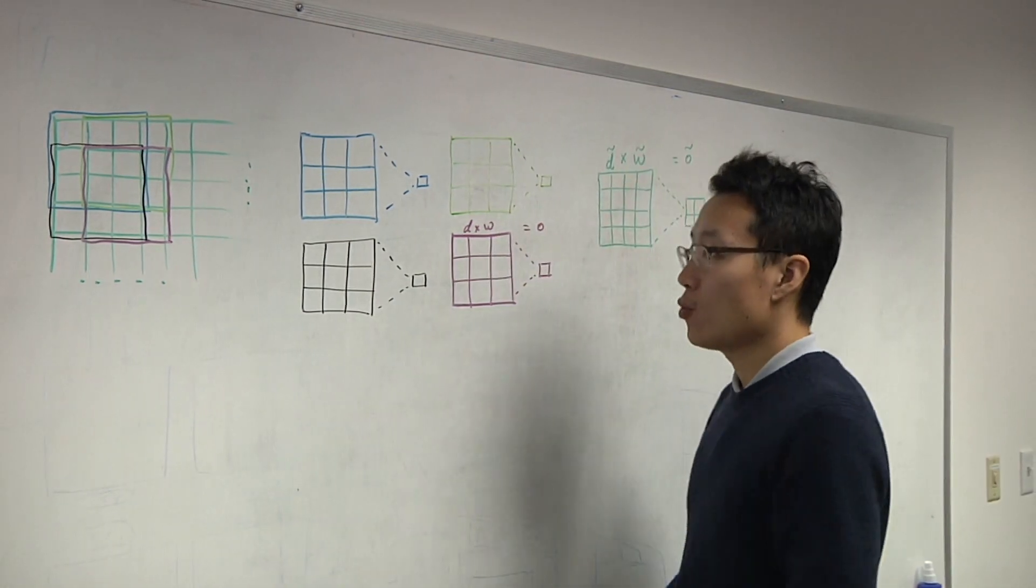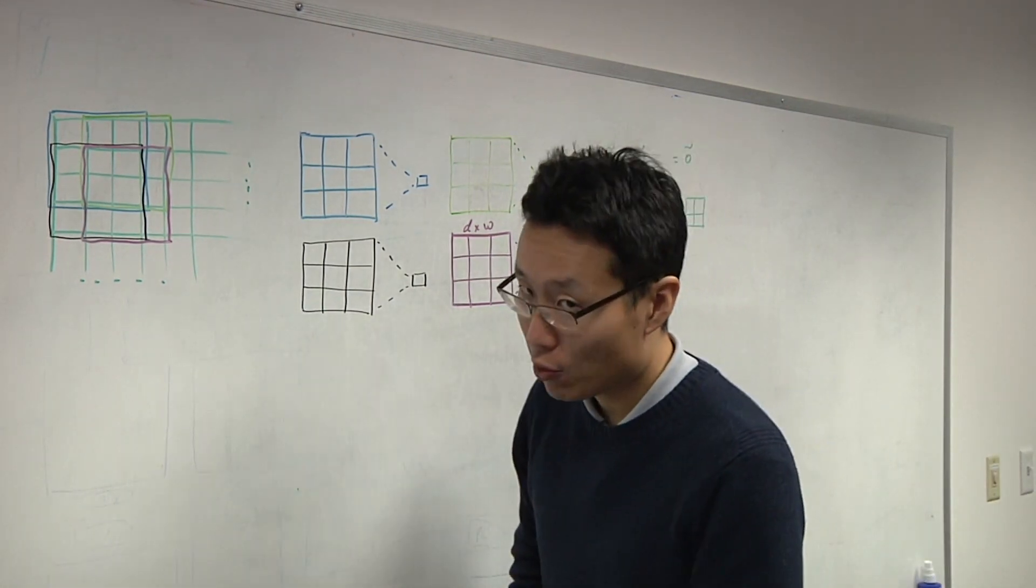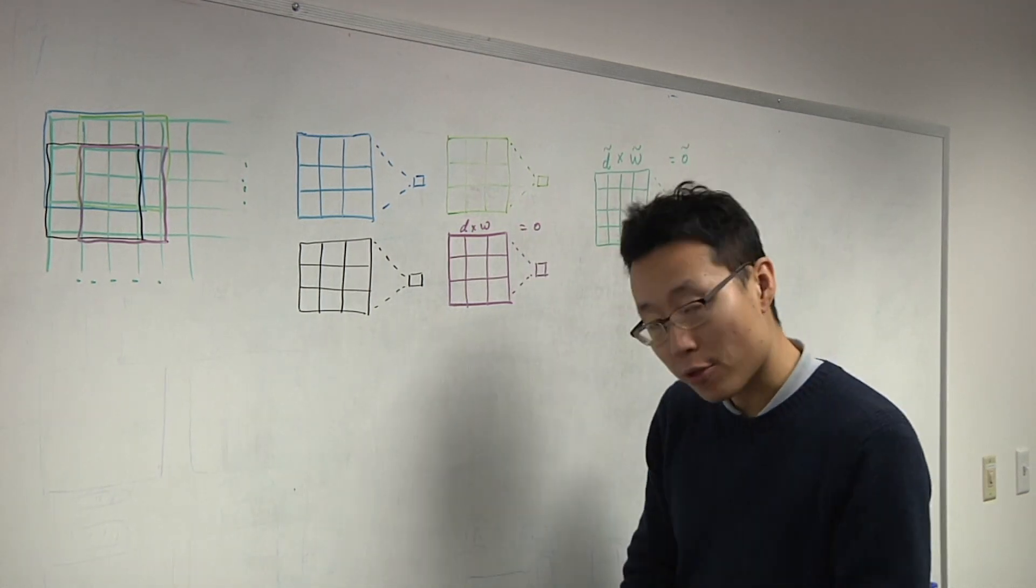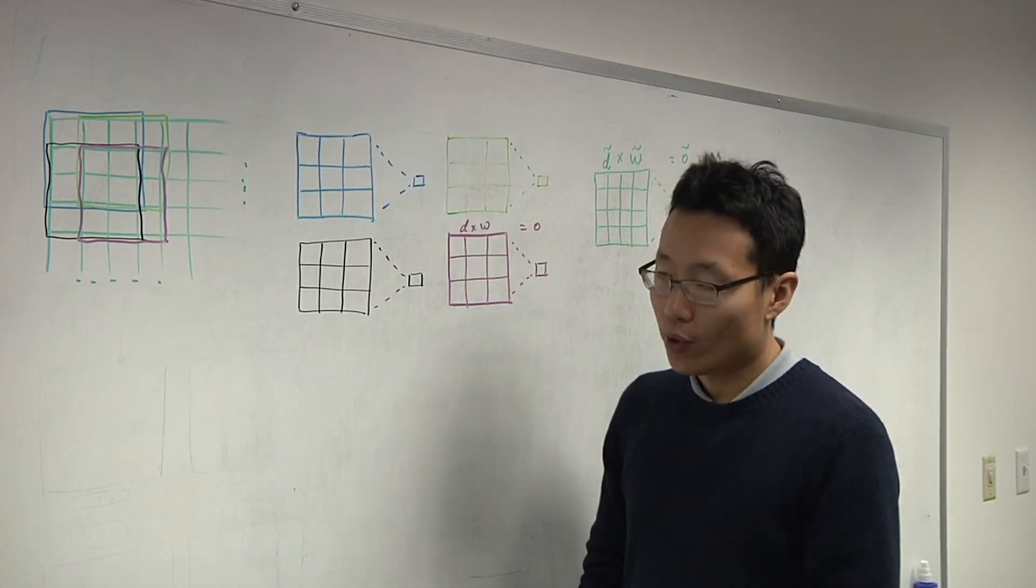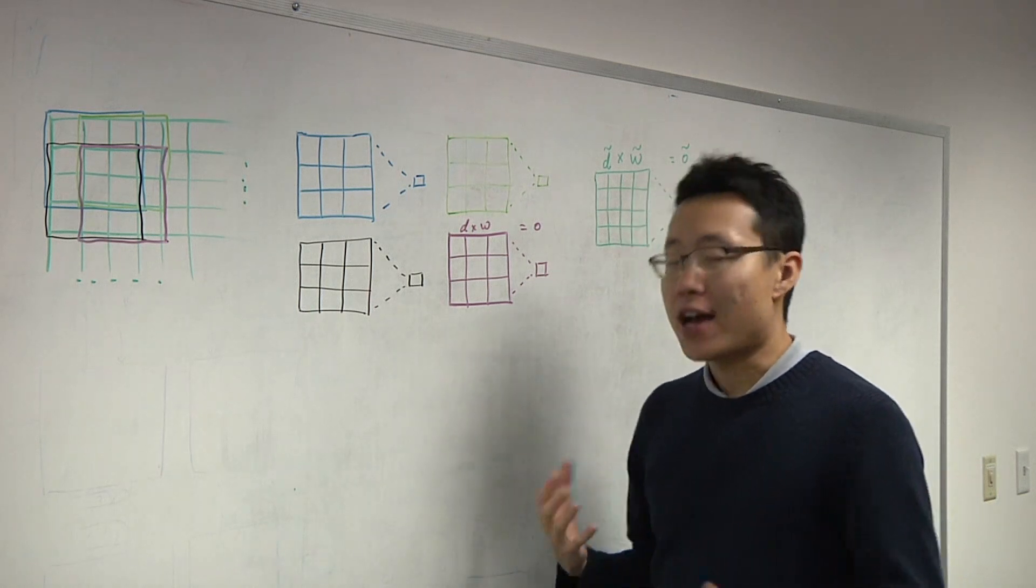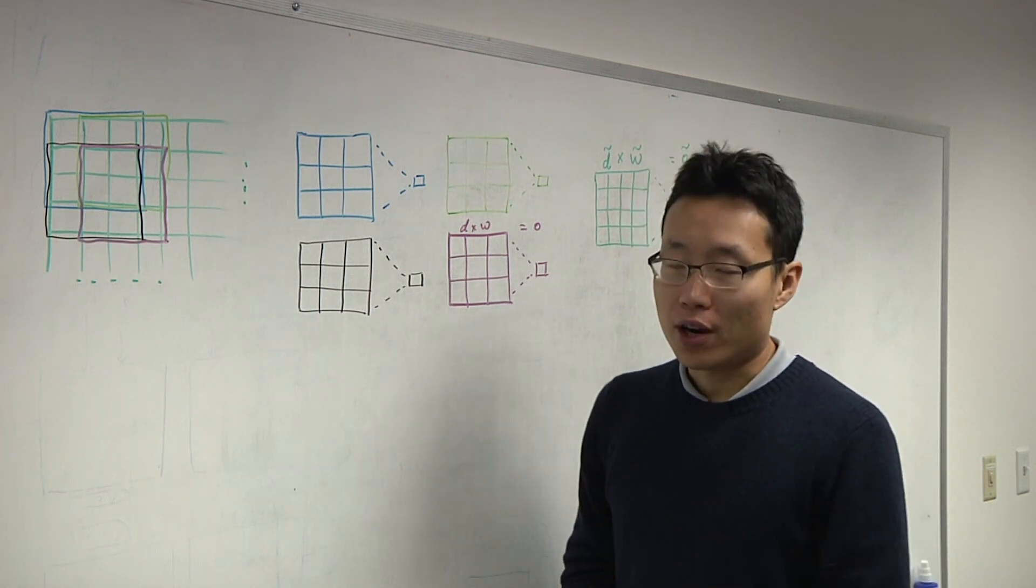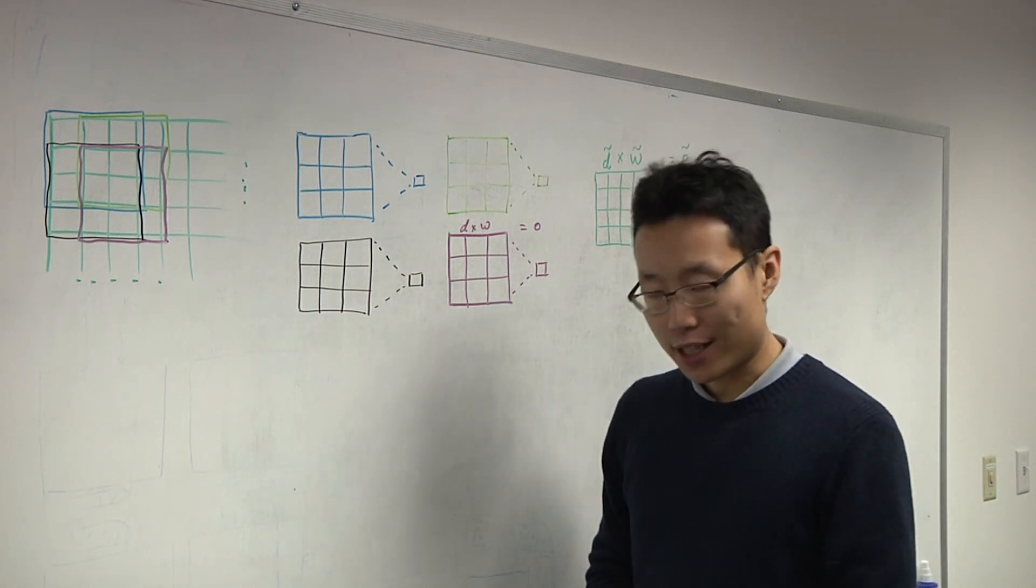Generally speaking, most of the Winograd transformation in CNN networks is applied onto 3x3 convolutions with a stride of 1, which is actually the vast majority of the compute requirement in most of the neural network models out there.